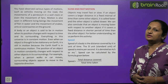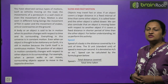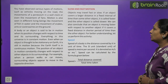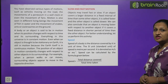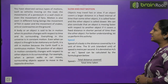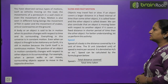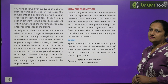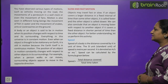Slow and fast motion: when an object changes its position very quickly with respect to time and its surroundings, it is called fast motion. If we change our position very slowly, that is called slow motion. Objects may travel fast or slow. If an object covers a larger distance in a fixed interval of time than some other object, it is said to be faster, and the other object is slower.